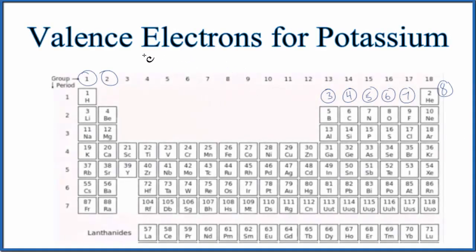In this video, we'll figure out the number of valence electrons for potassium, K. There are two ways we can figure out the number of electrons in the valence shell for potassium.